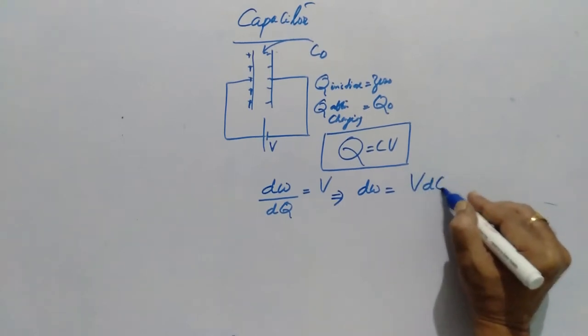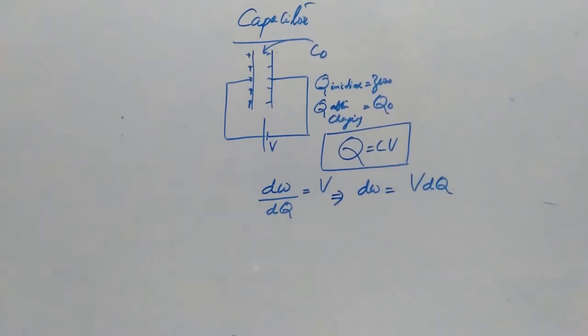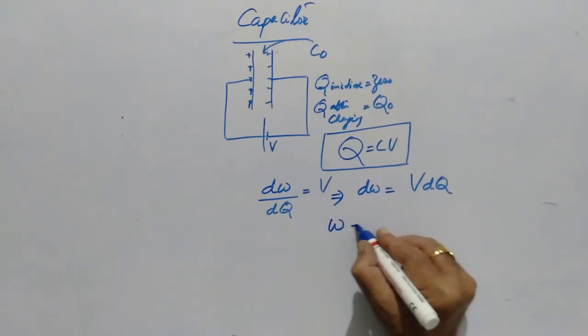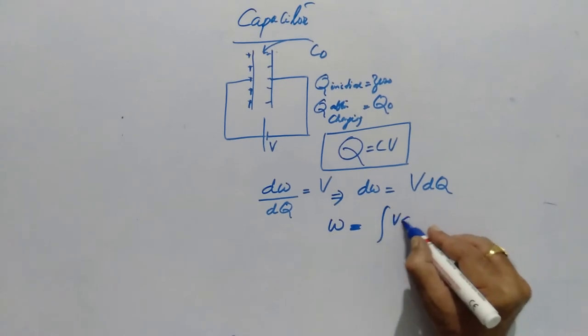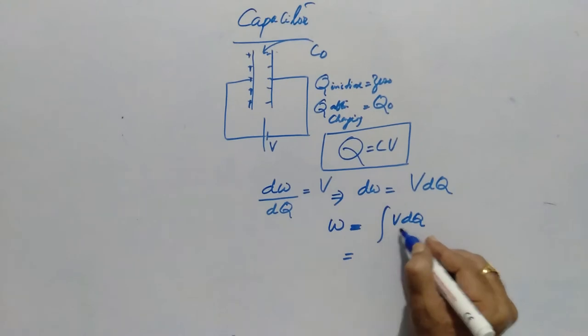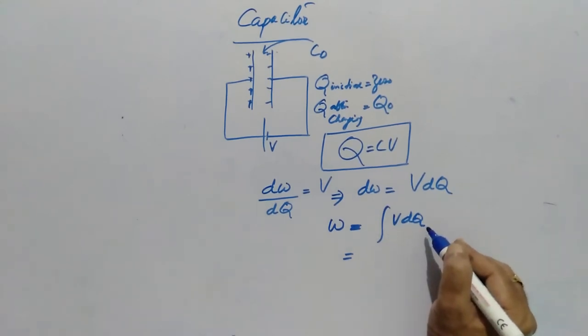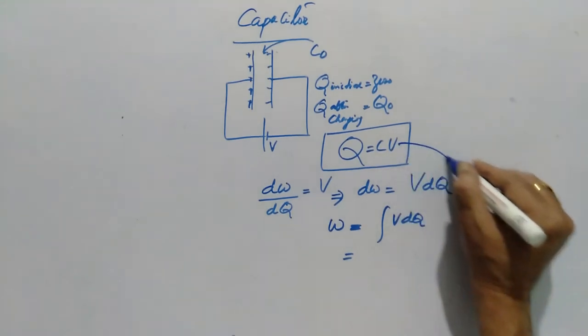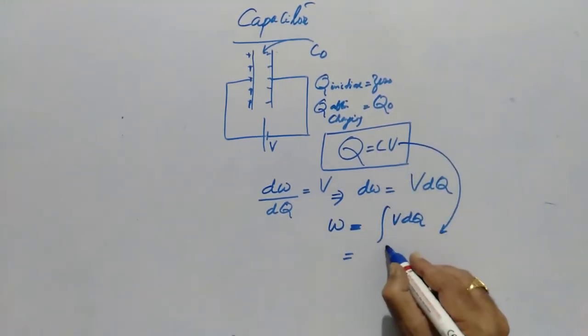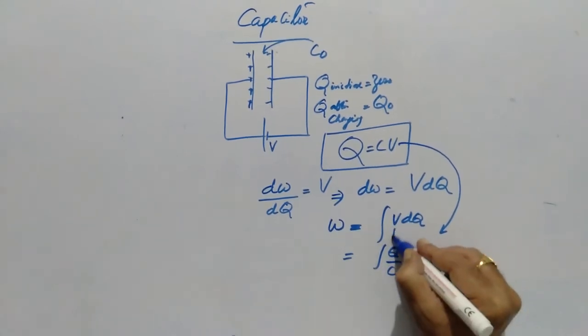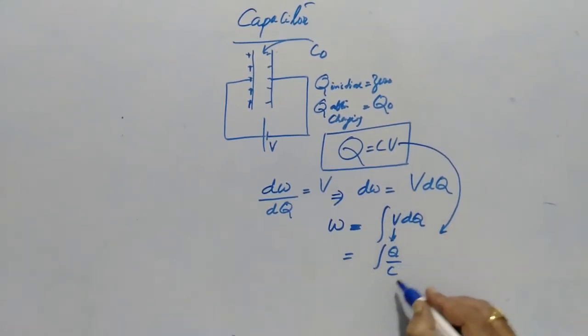So dW/dQ = V, which implies dW = V dQ. To calculate the net work done, we have to take the integration of V dQ. But V cannot be integrated with respect to charge, therefore I have to make use of this equation. From this equation, I can write it as Q/C. In place of V, I can write Q/C.